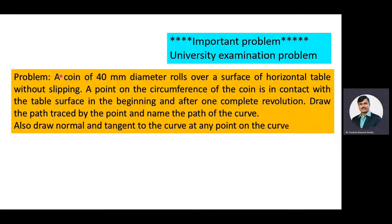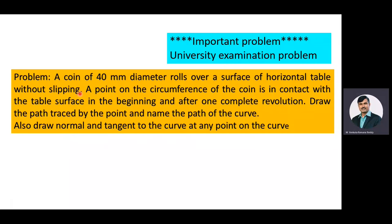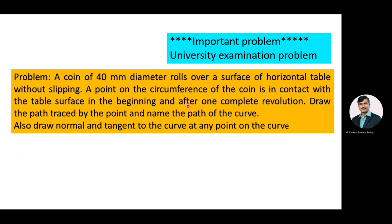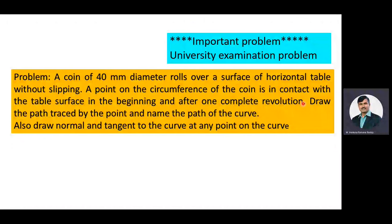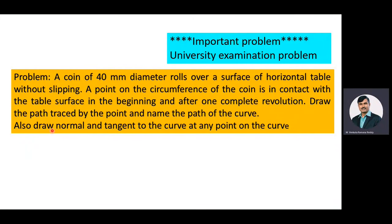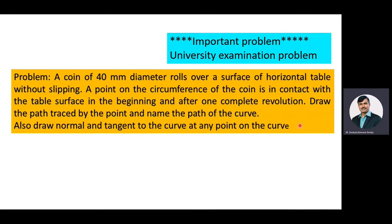The given problem is: a coin of 40 mm diameter rolls over the surface of a horizontal table without slipping. A point on the circumference of the coin is in contact with the table surface in the beginning and after one complete revolution. Draw the path traced by the point, name the curve, and also draw the normal and tangent to the curve at any point on it.